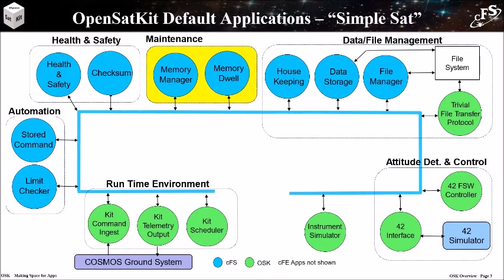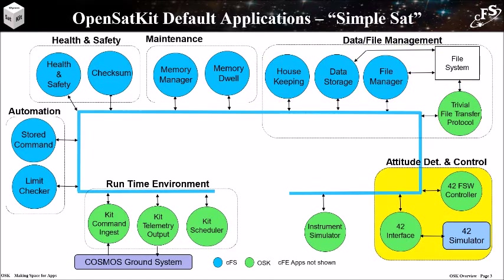The automation and health and safety apps provide automated operations and spacecraft safekeeping. The maintenance apps provide tools for in-orbit diagnostics, debugging, and flight software changes. The data and file management apps provide packet data and file management services as well as file transfer services. The attitude determination control apps compute current orbit and attitude states and perform closed-loop control functions. Currently, OpenSatKit's 42 closed-loop configuration is not integrated with the SimpleSat mission. The apps configured for SimpleSat perform what has traditionally been called command and data handling functions.